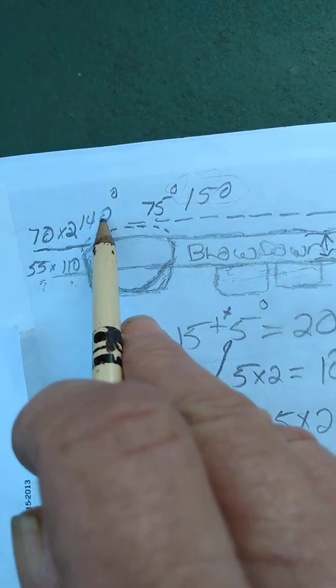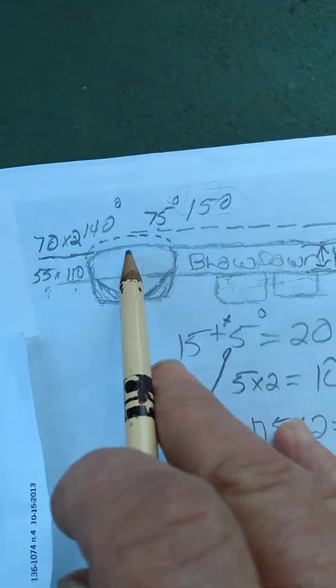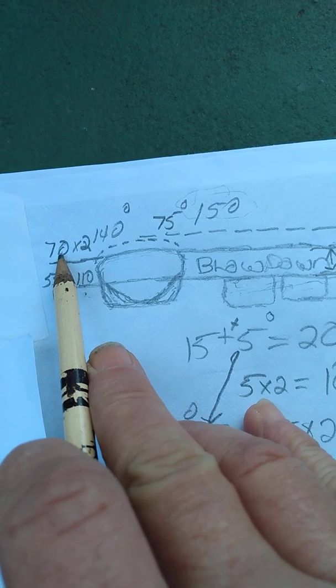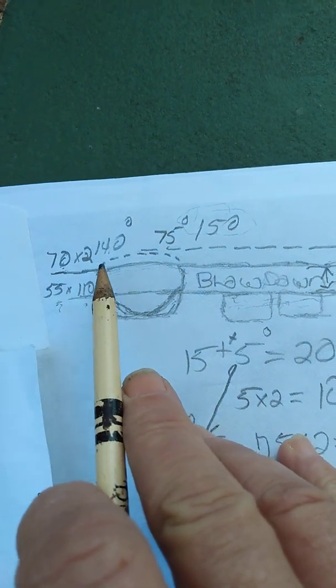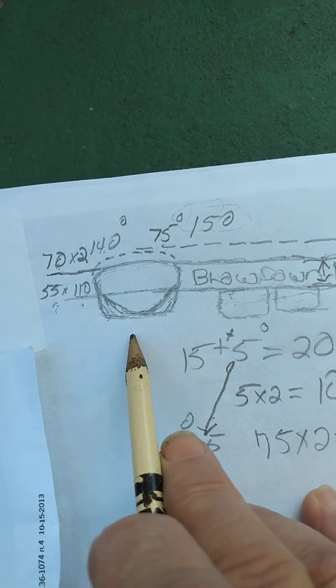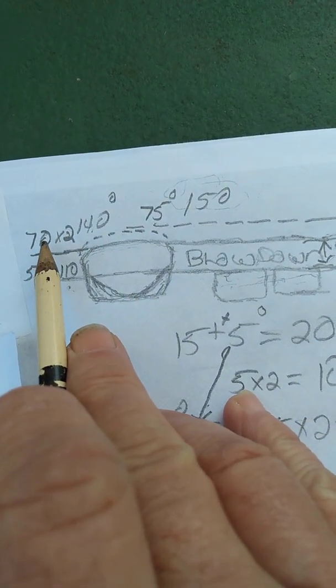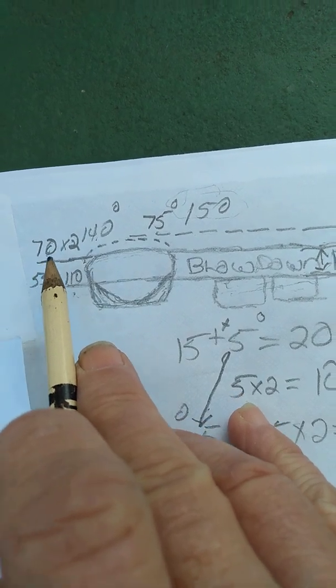My exhaust port, hypothetically stock line right there, opens at 70 degrees. Since it's symmetrical, it's going to close at 70 degrees. 70 times 2 is 140. Real simple stuff. Overall duration, as I stated, is port opening and closing. That is exactly what that is, a port opening and closing.